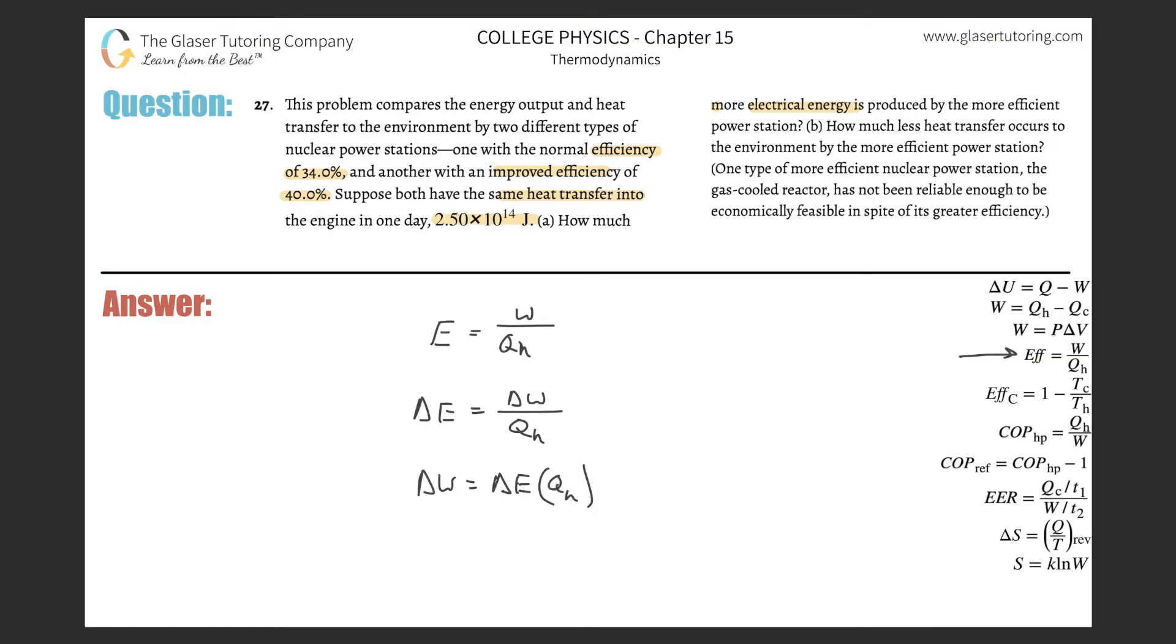And now all we have to do is really just plug in. So the change in work, or the amount of the more electrical energy that's produced, is now going to be the change in efficiency, or basically the difference between 40% and 34%. Now remember, that's basically 6%, but you got to plug that in as a decimal when you do your calculation. And then just plug in the heat transferred into the engine of 2.5 times 10 to the 14.